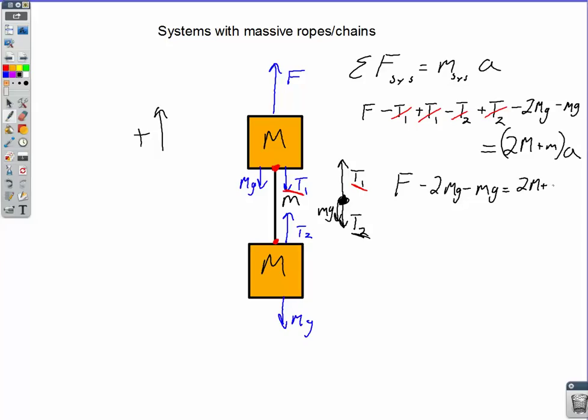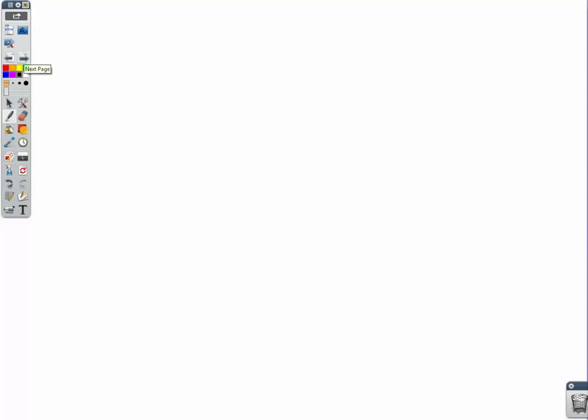So dividing by the total mass, we get our acceleration. Other interesting questions that we can ask now are what is T1 and what is T2? So let's take a look at that on the next page.